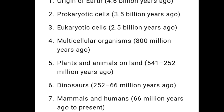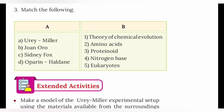Plants and animals on land appeared 541 to 252 million years ago. Dinosaurs existed 252 to 66 million years ago. Mammals and humans appeared 66 million years ago to the present. That is the level of mammals and humans.